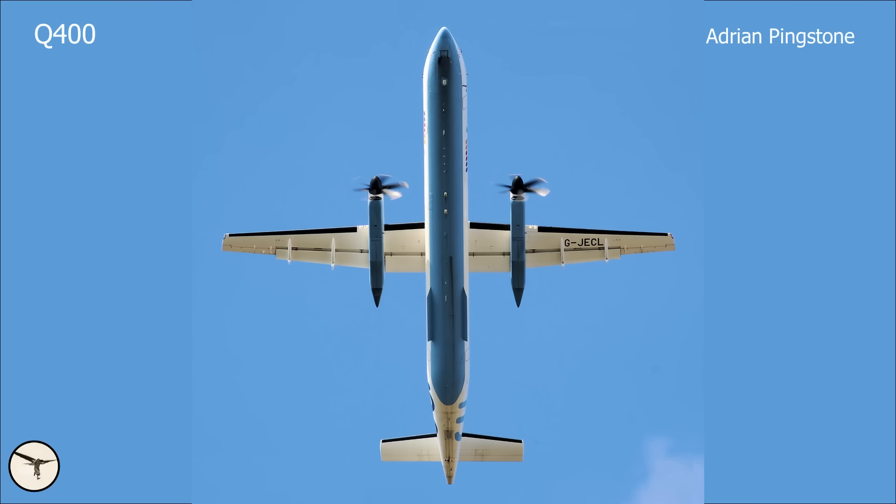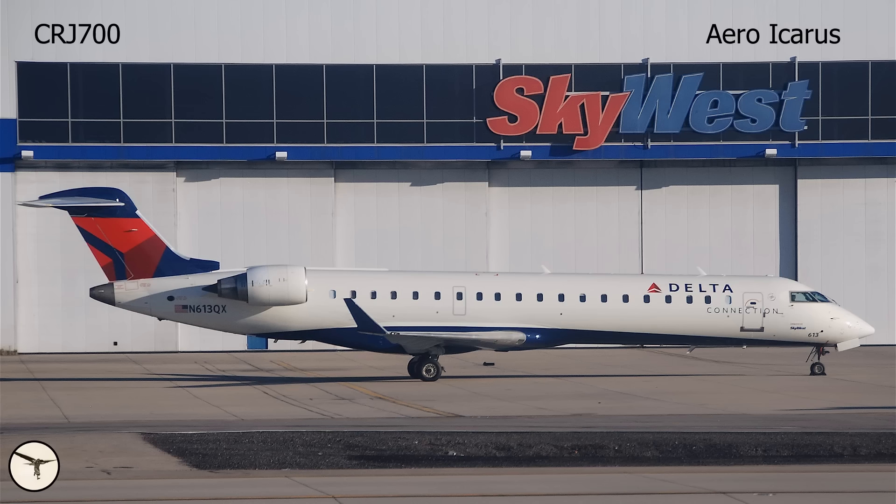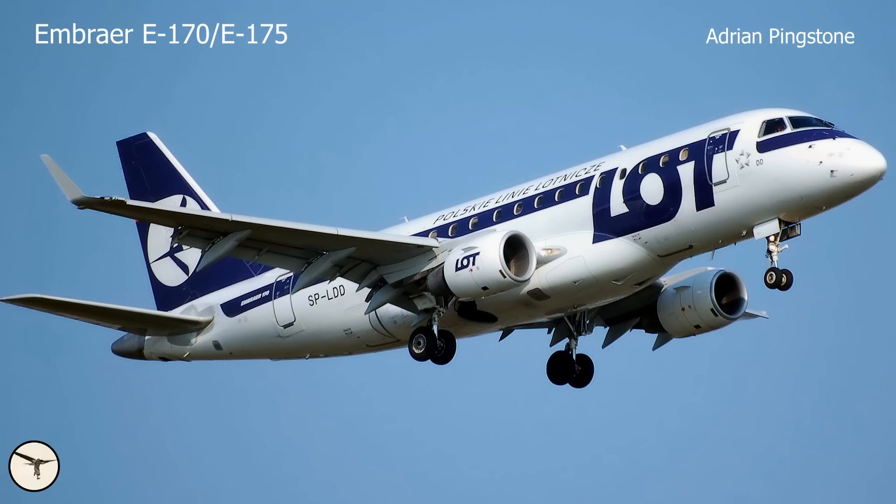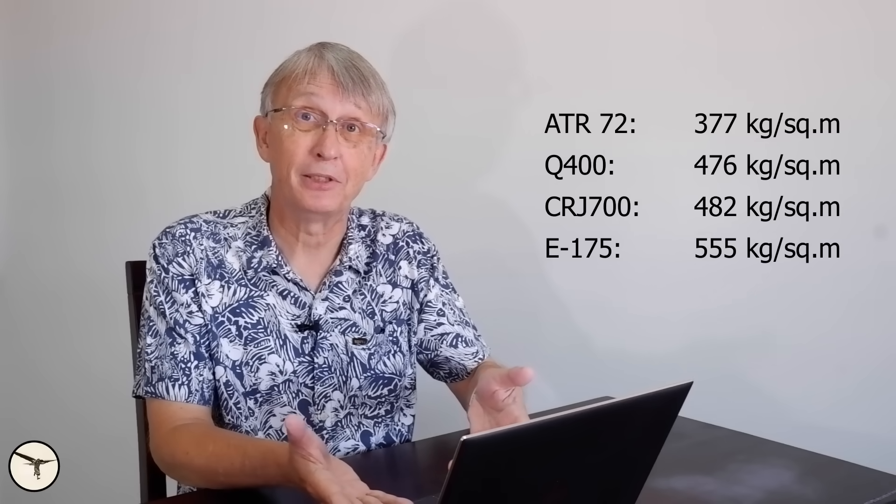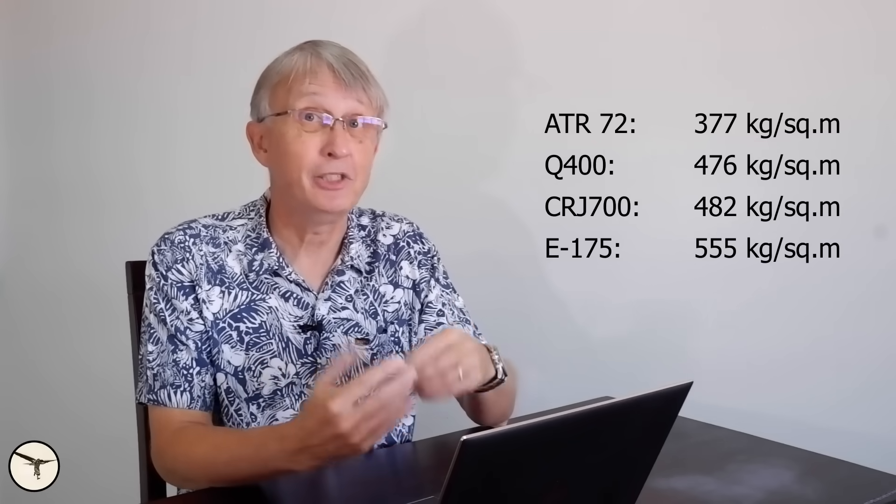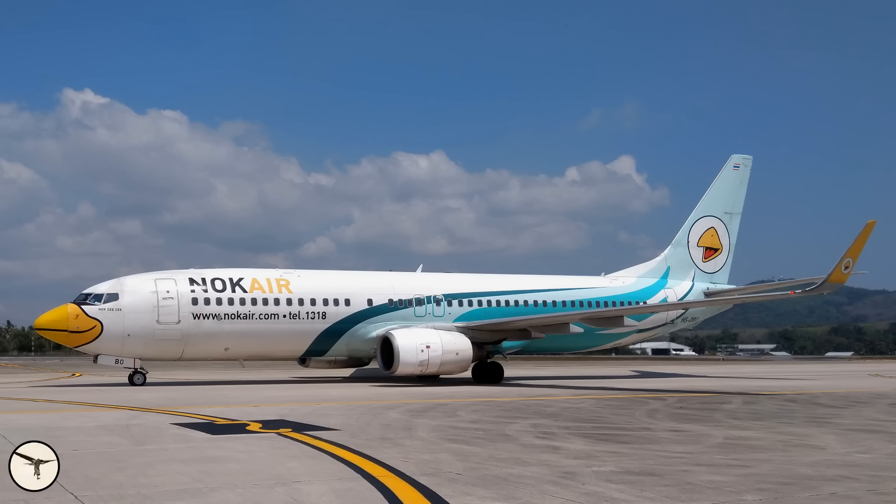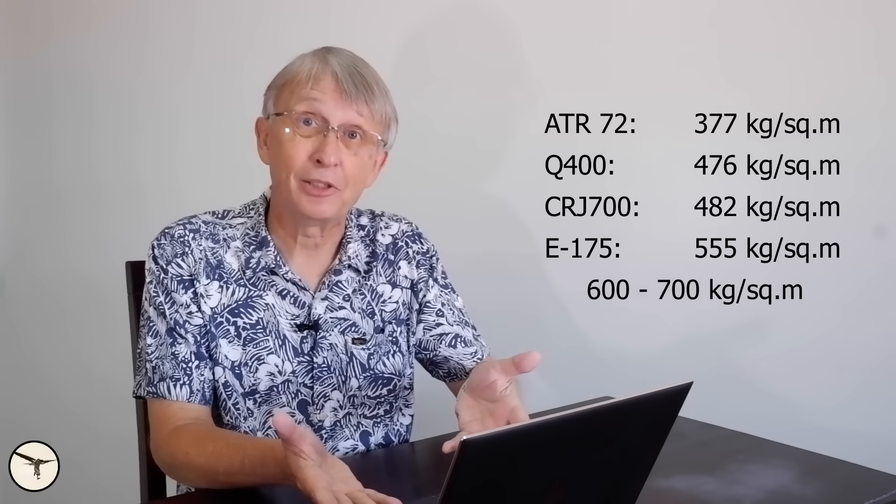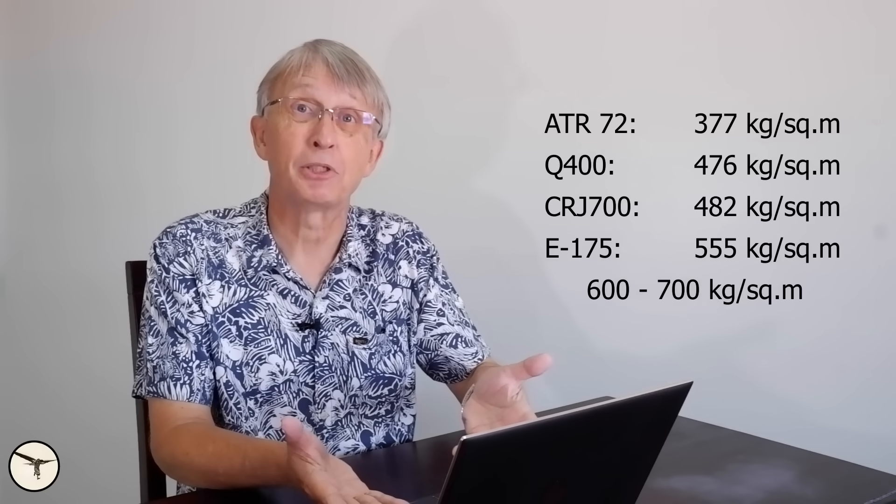The wing loading of the Q400 is very similar to that of the CRJ 700, which has 482 kilos per square meter. And if you look at Embraer, the E175, which is the nearest when you compare to seating, it has a wing loading of 555 kilos per square meter. And when you look at the bigger jets from Boeing 777 and up, they will have a wing loading between 600 and 700 kilos per square meter.